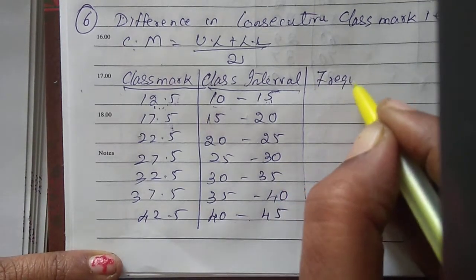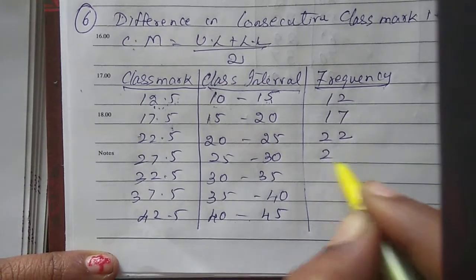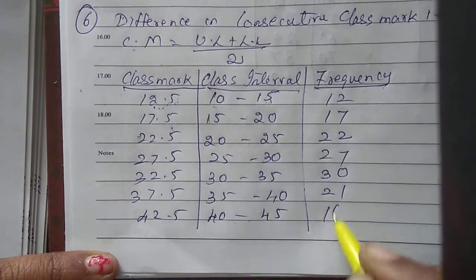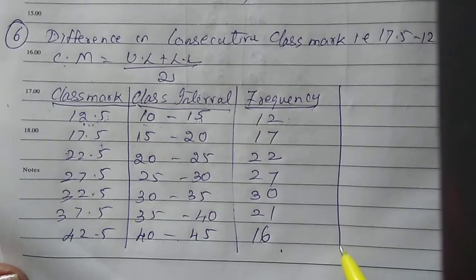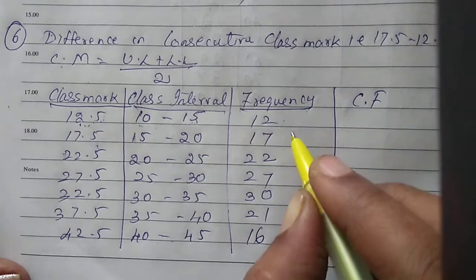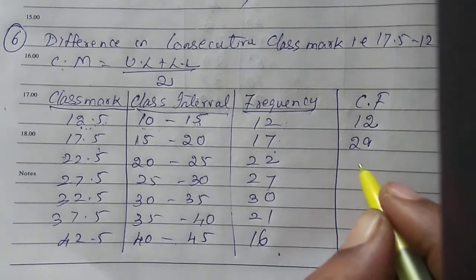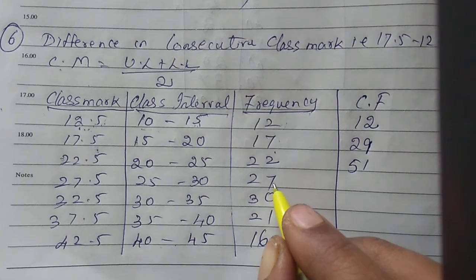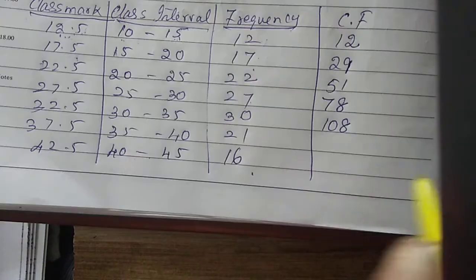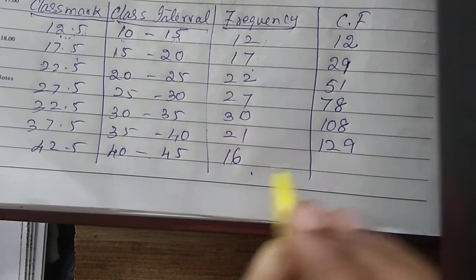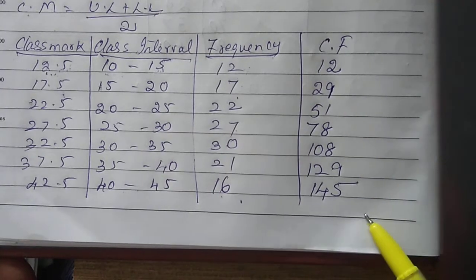For these class intervals, the frequencies given are 12, 17, 22, 27, 30, 21, and 16. We find cumulative frequency: starting with 12, then 12 plus 17 is 29, then 29 plus 22 is 51, then 51 plus 27 is 78, then 78 plus 30 is 108, then 108 plus 21 is 129, and finally 129 plus 16 is 145. Summing up each frequency we get the cumulative frequency.